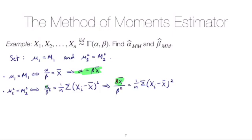And I'll skip those few little intermediate steps. You should get n times x bar over the sum of the deviances squared as your method of moments estimator for beta.